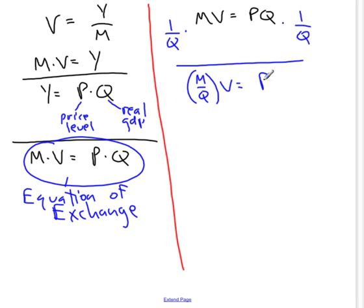Now, that's sort of interesting. That tells us that the price level depends on two things: the velocity of the circulation of money and the ratio of the money supply to real output.